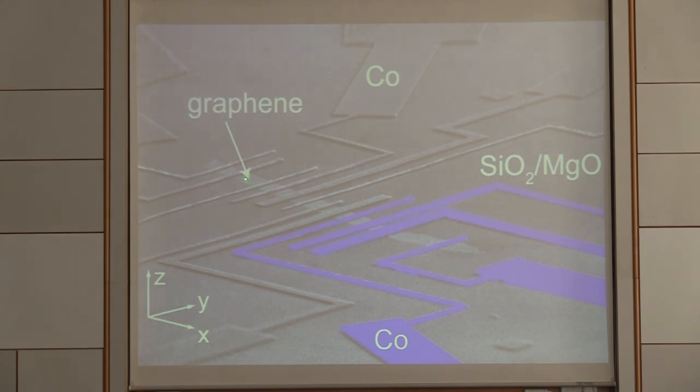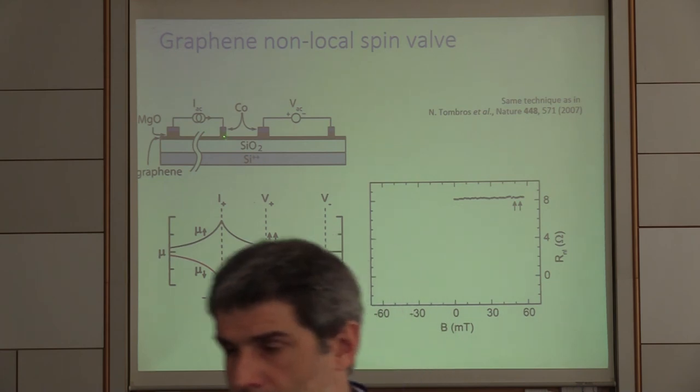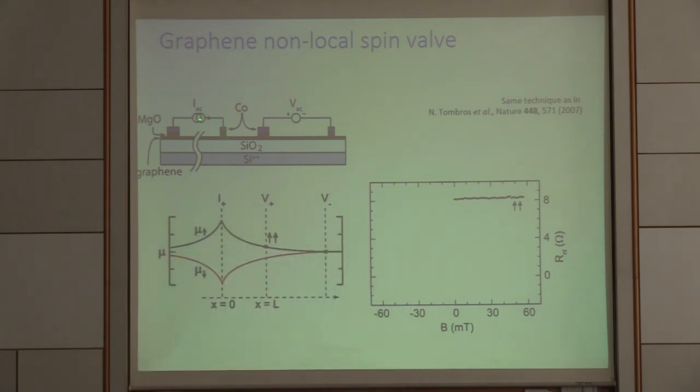These are all types of contacts, and then we use a configuration of four contacts, such that we can actually drive a current on one side. So here you see in our cross-section, the black part here is the graphene, and we have MgO as a tunnel barrier, and then the cobalt.